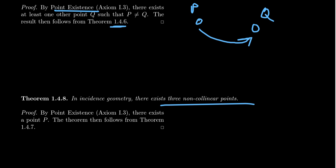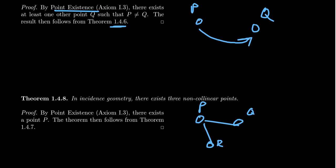We combine the previous theorems, which used line determination, non-collinearity, and point existence. By point existence, there is a point P. By the previous theorem, that point can be extended to a set of three non-collinear points — and so we now have our triangle P, Q, and R.